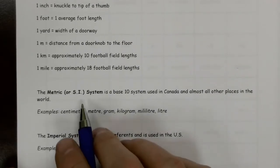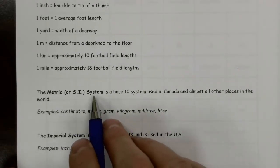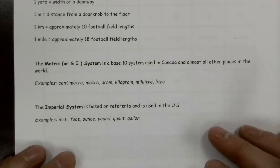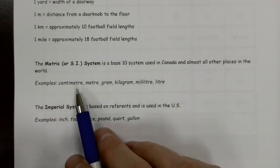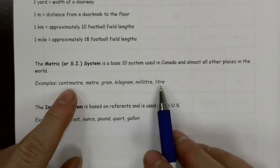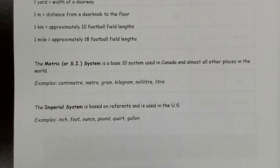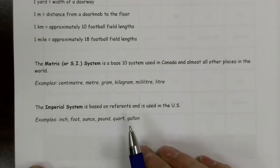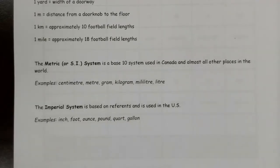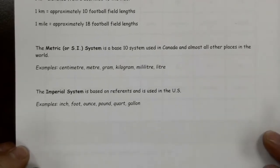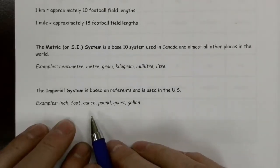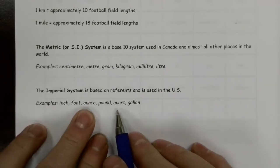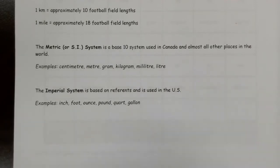The metric system, or SI system — Système International — is a base-10 system. It's used here in Canada and in places all over the world. Centimeter, meter, gram, kilogram, liter, milliliter — these are our basic units. The imperial system is based on reference and is used in the US and a couple of other countries. Common imperial measurements include the inch, the foot, ounce and pound, quart and gallon.